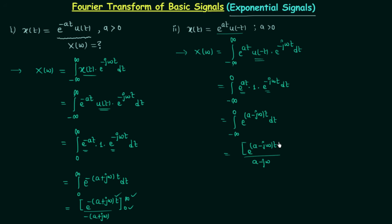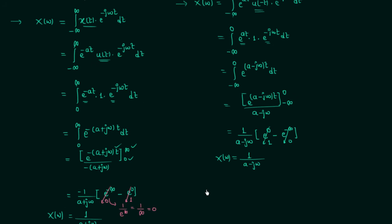The lower limit of integration is minus infinity and the upper limit is 0. Putting in the limits, we have e power 0 minus e power minus infinity, giving 1 minus 0. So 1 is multiplied by 1 over (a minus j omega). Therefore the Fourier transform equals 1 over (a minus j omega). The time domain signal e power at, u(minus t), has Fourier transform 1 over (a minus j omega), where a is positive.